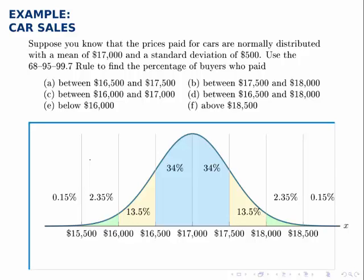But now that we have them, we can use them to solve the problem. So part A asks what percentage of buyers paid between $16,500 and $17,500. We find those two points on our picture and between them we add up the blocks and find that 68% of buyers were in that area. Similarly for part B, between $17,500 and $18,000, we locate those points and between them there's just one region with 13.5%.